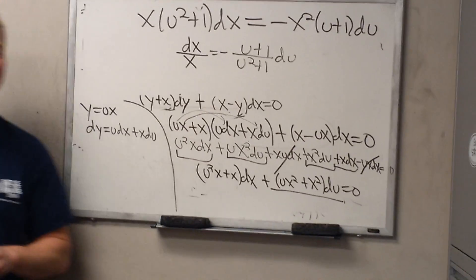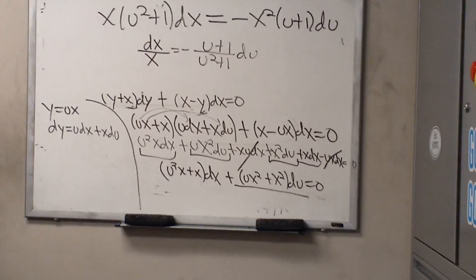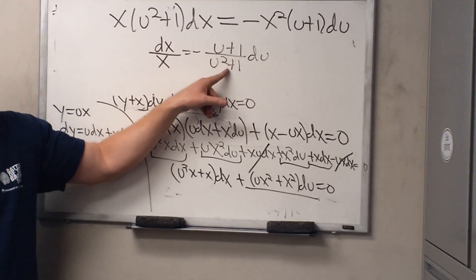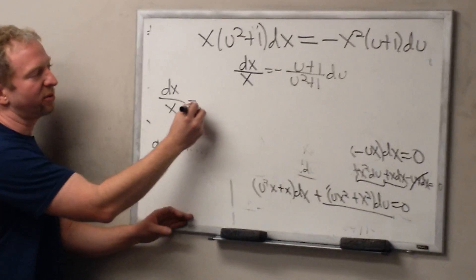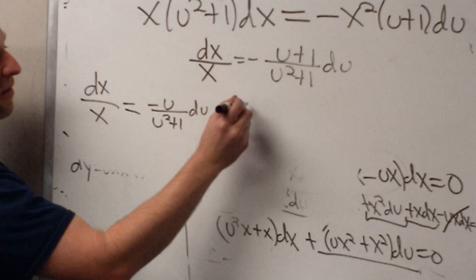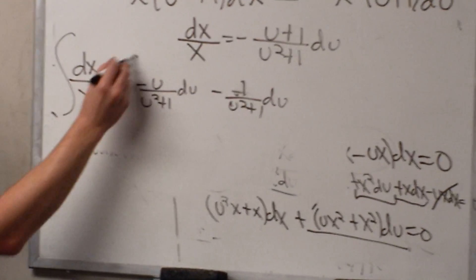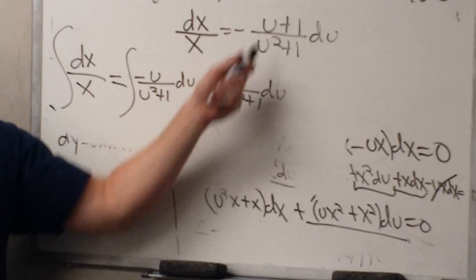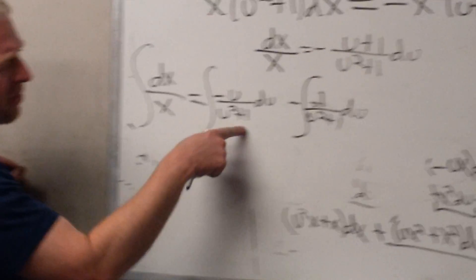So this is going to be an ln. Now this guy here — you can break it up. If you write it as u over this, you can make a substitution. And 1 over this is going to give us an arctan. So this is dx over x, which equals negative u over (u squared plus 1) du, and then negative du over (u squared plus 1). Breaking it up: negative u over this, negative 1 over this — the negative gets distributed. So ln absolute value of x... this is going to be arctan u, right?